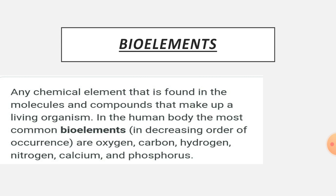Now the important question is: what chemistry is involved in living organisms? There are a total of 118+ elements discovered till now, but the most important ones for living organisms are called bio elements. There are 16 bio elements in total, but the major ones are six. In descending order of occurrence these are: oxygen, carbon, hydrogen, nitrogen, calcium, phosphorus, and sulfur.